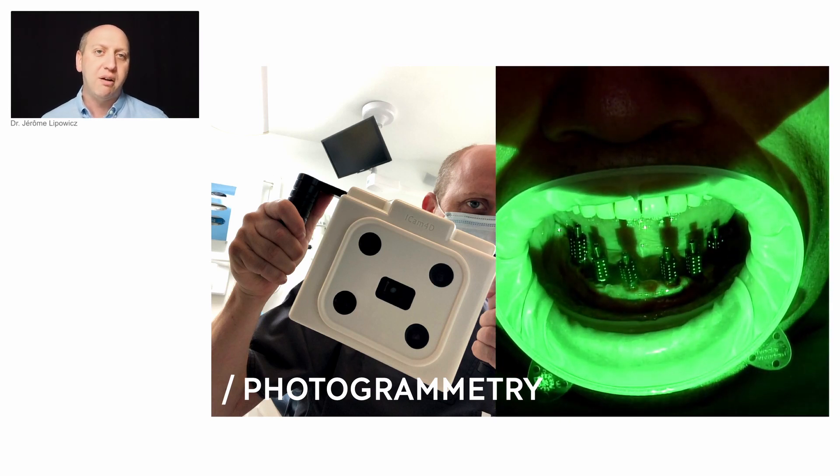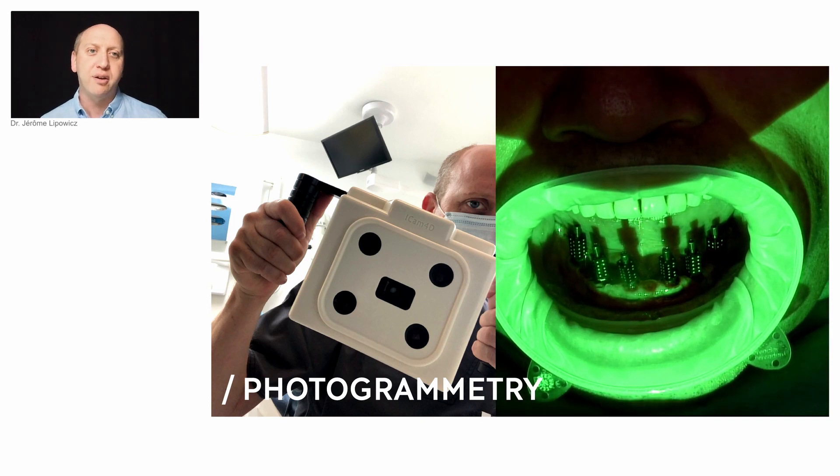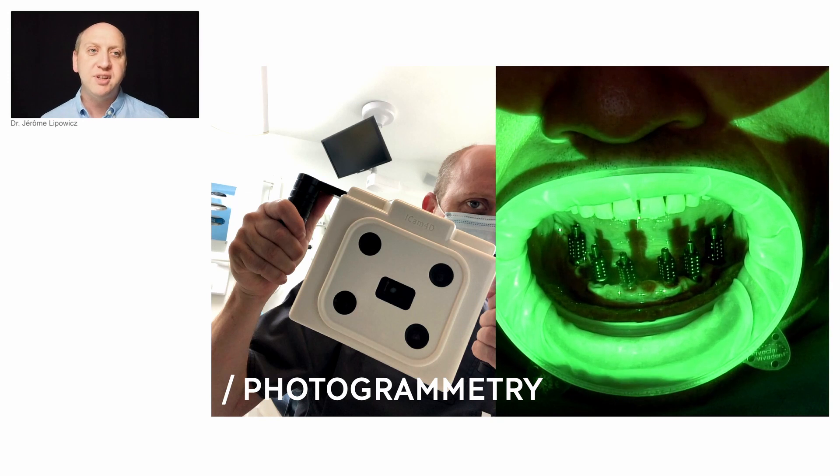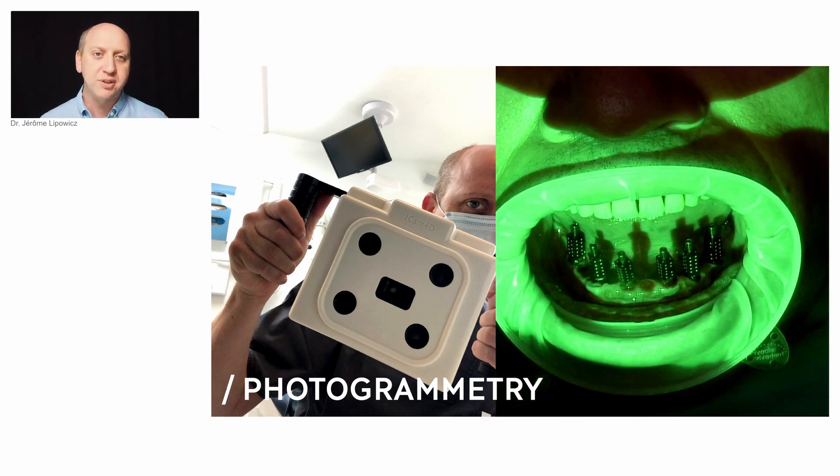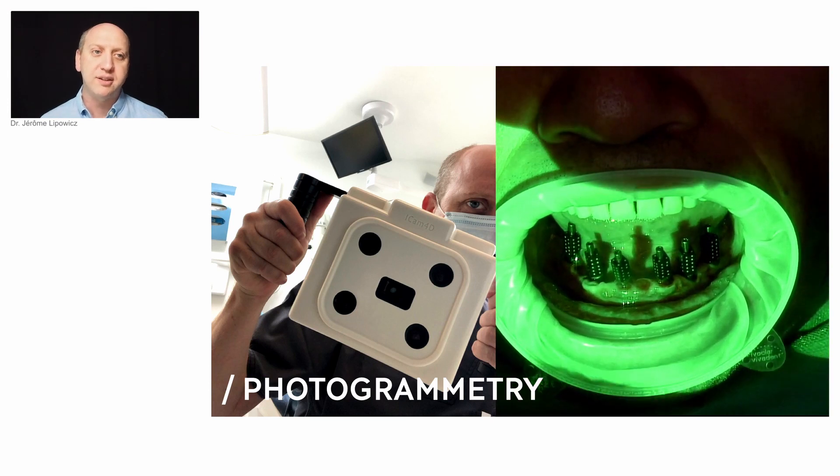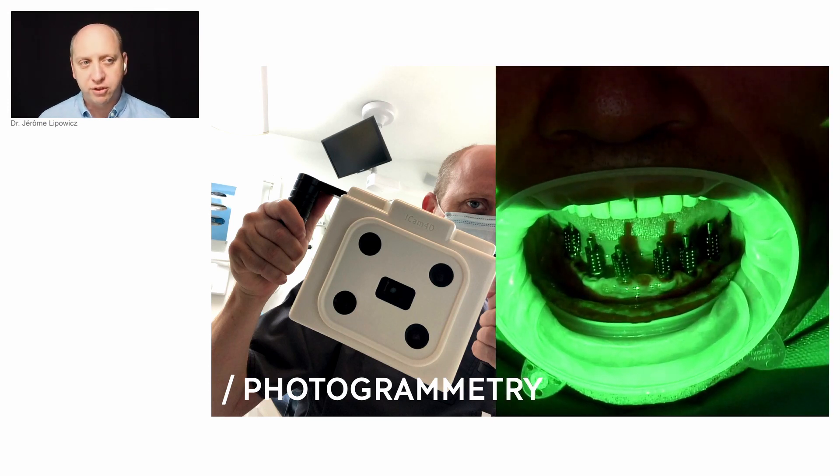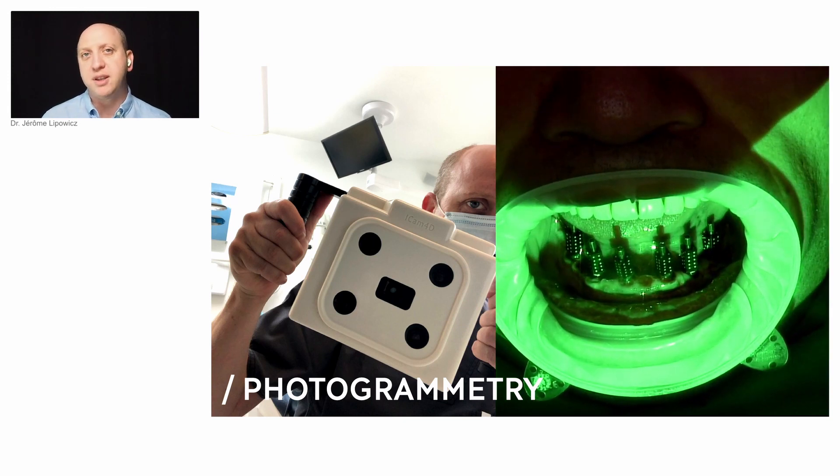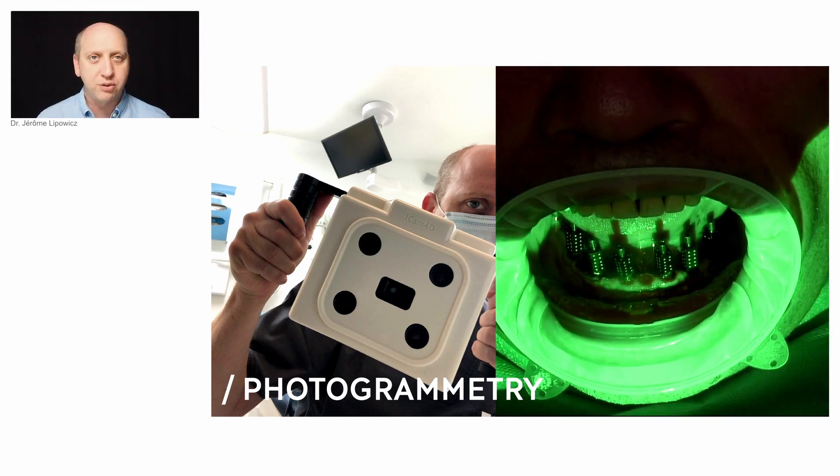Photogrammetry is the art and science to derive 3D information from images. It locates the geometric characteristics of objects and their spatial orientation using several photographs. It's the technology that is used in topography, archaeology, and also by Google Maps.